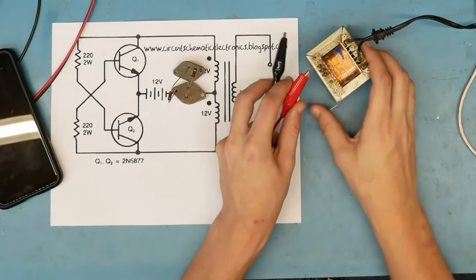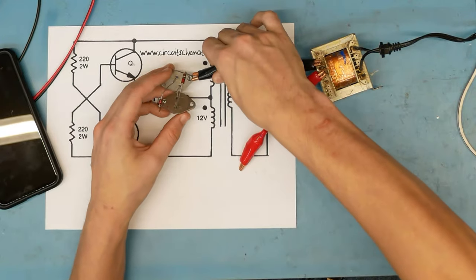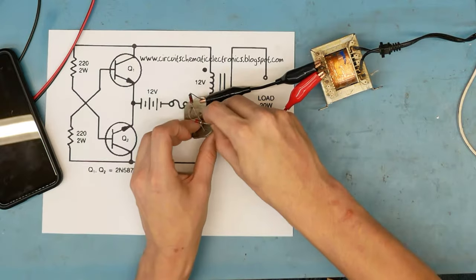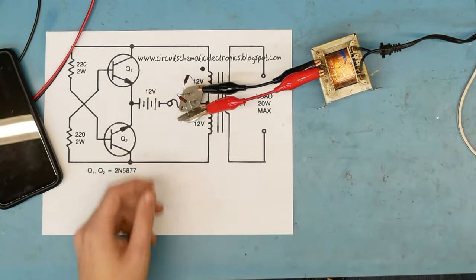We'll do kind of the same thing on this side. We will connect that to our transformer, then connect one end to the base of this. Get that in there, kind of clamp that in there. So our circuit is basically complete.